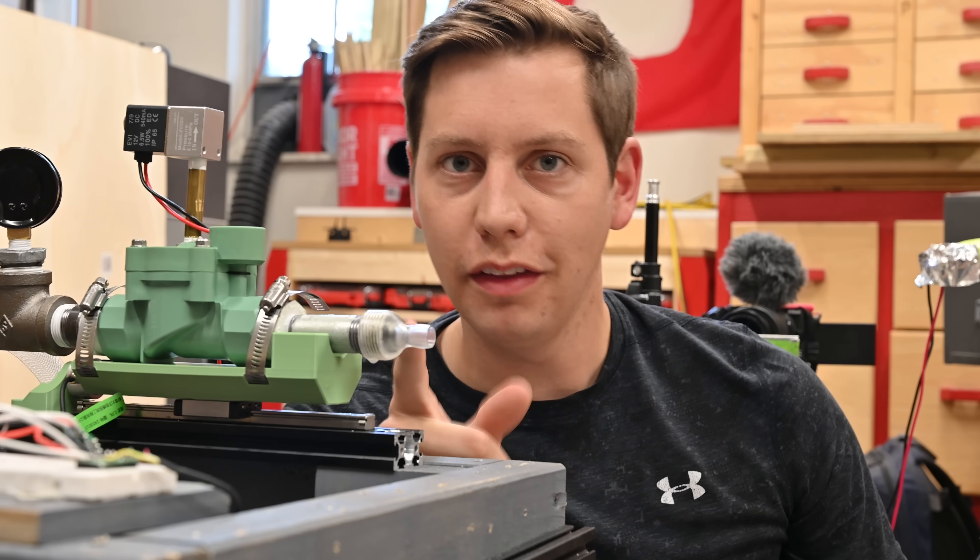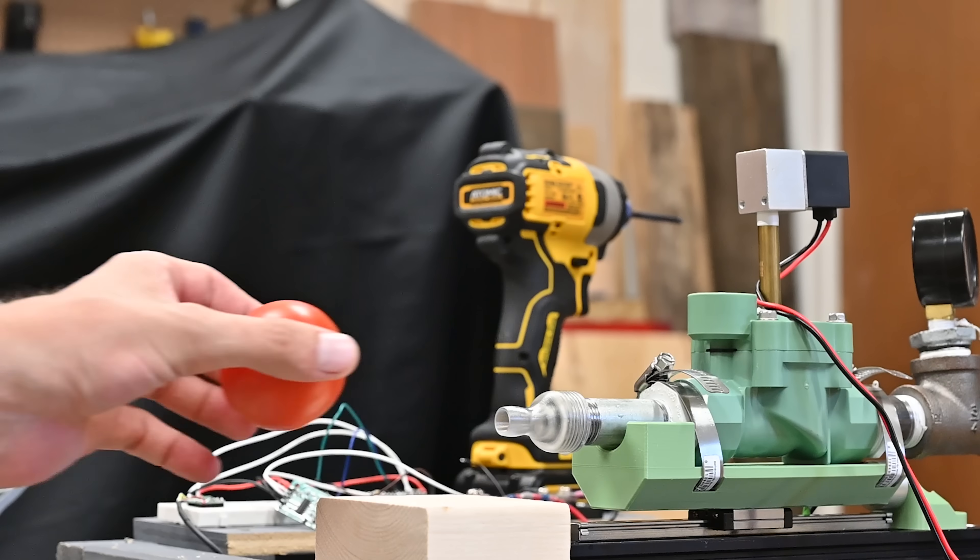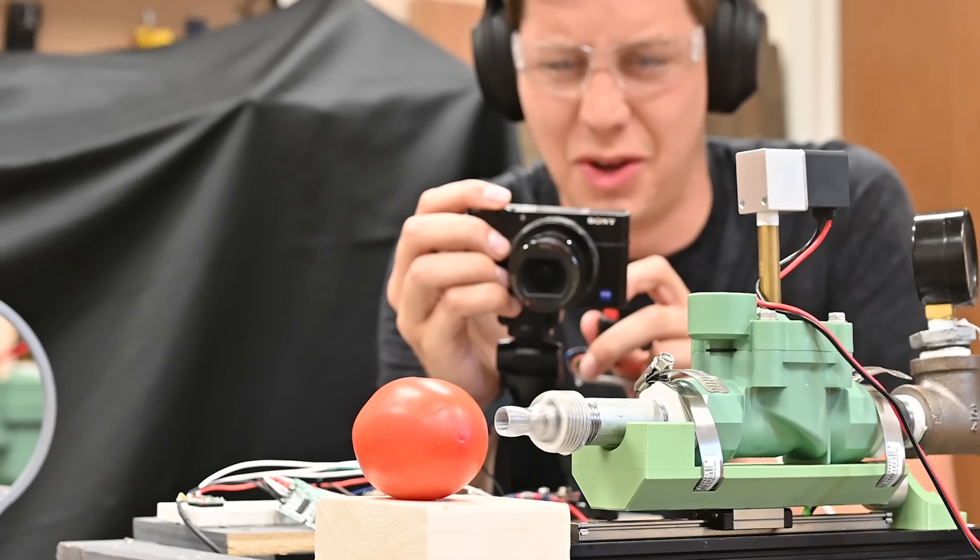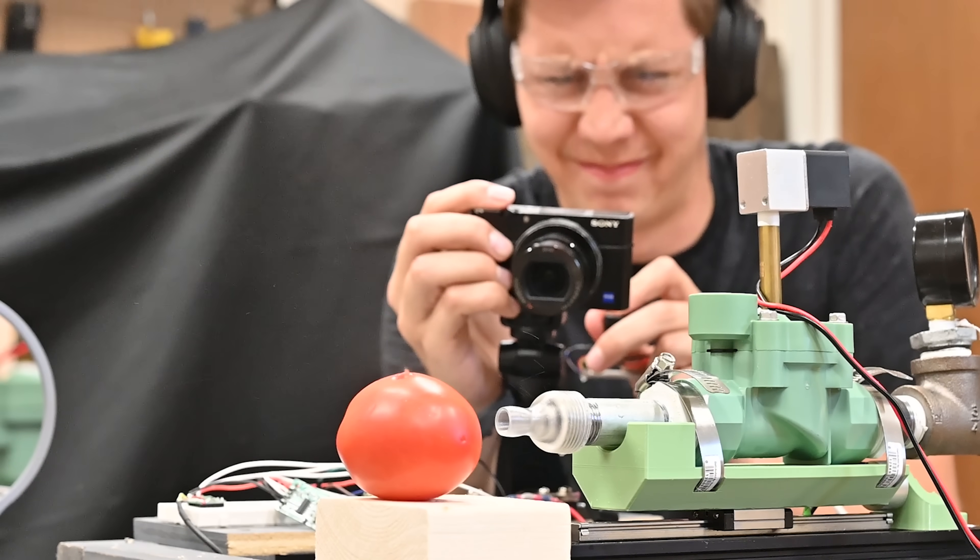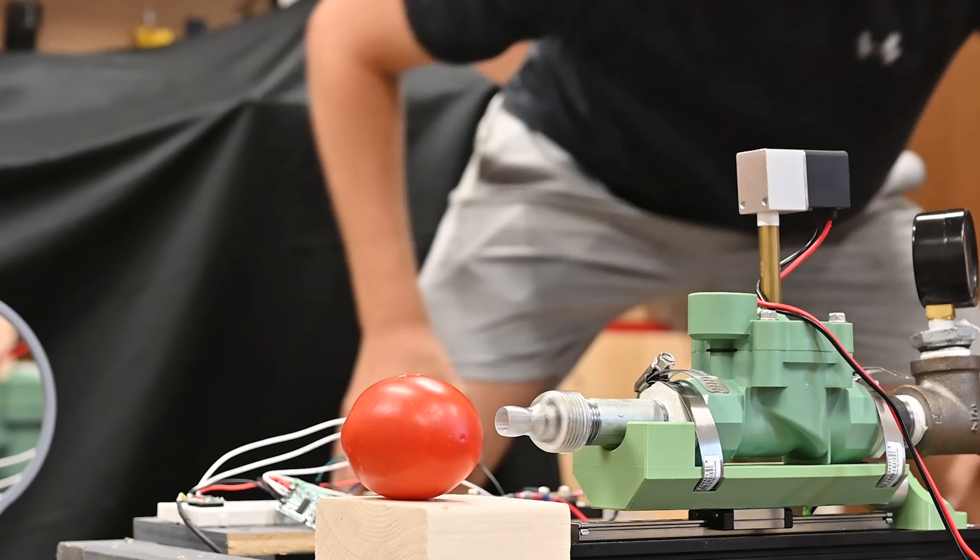The question now becomes, what will one of these nozzles do to a tomato? Let's find out. Fasten this guy down. 3, 2, 1. They didn't do anything. That's one tough tomato.